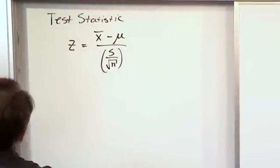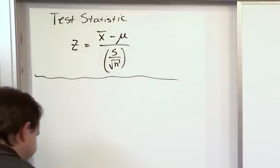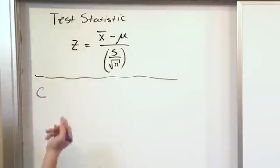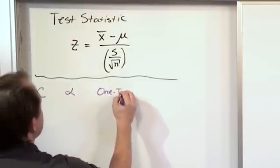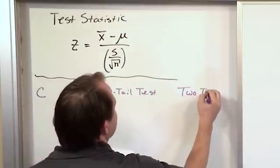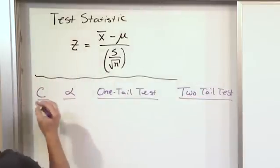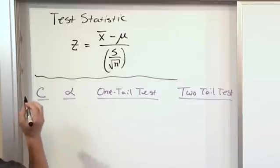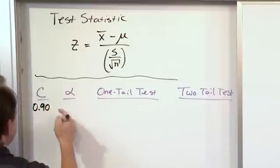Let me write some information here and then explain its significance. Here is a table with columns for C (level of confidence), alpha, one tail test, and two tail test. Let's take some common values. For 90% confidence, C is 0.90 and alpha is 0.10.